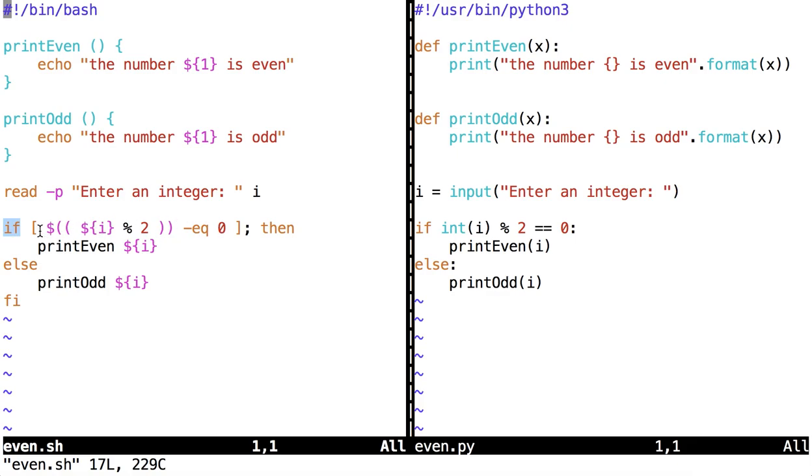If this evaluates to true, then call print even, passing the value stored at i as an argument. If it does not evaluate to true, call print odd with the value stored at i as an argument, and then bash requires fi to end the if.